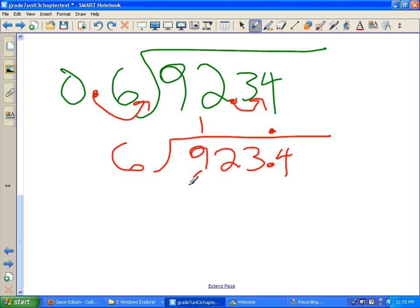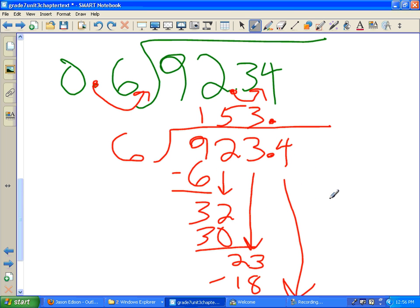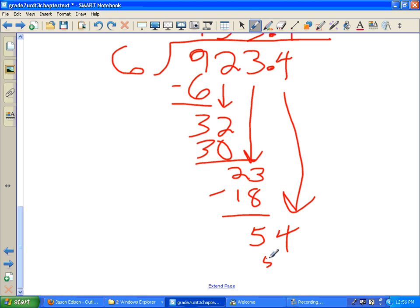And then do 6 into 9. It goes into it once, and we have 3 left over. Because 1 times 6 is 6. Bring down your 2. And 6 times 5 is 30, and you've got 2 left over. Bring down your 3. 6 times 4 is 24. But 6 times 3 is 18, and you take that away and you've got 5 left. Bring down your 4. And 8 6s are 48. 9 6s should give you pretty close to 54, and you will get the final answer with no remainder.